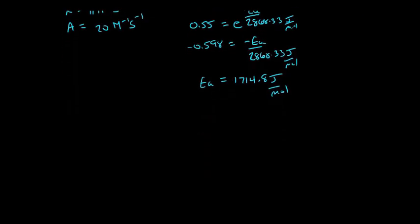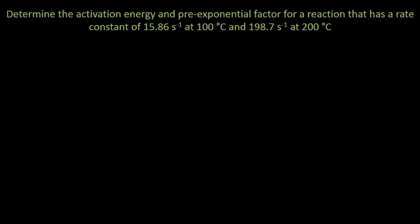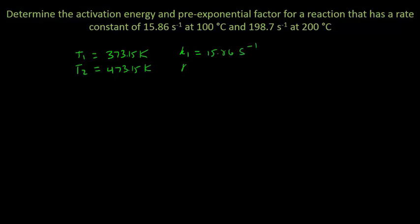Let's try one more problem. We are given two temperatures: T1 is 100 degrees Celsius, which is 373.15 Kelvin, and T2 is 200 degrees Celsius, which is 473.15 Kelvin. The rate constant at T1 is 15.86 per second and at T2 is 198.7 per second. Our goal is to calculate both the activation energy and the pre-exponential factor.